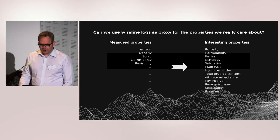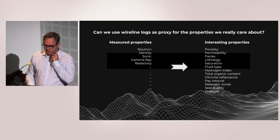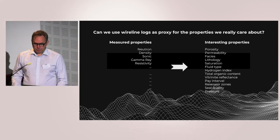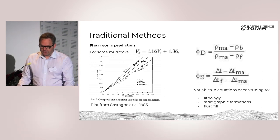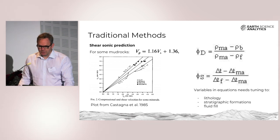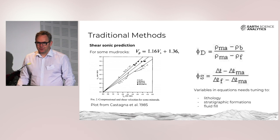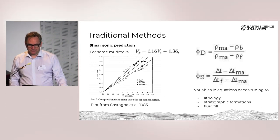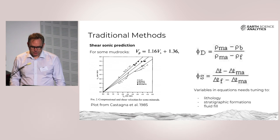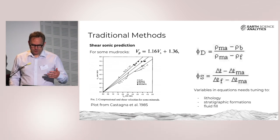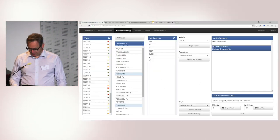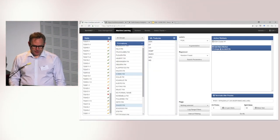Can we use wireline logs as a proxy for the properties that we really care about, like porosity and permeability? We know already that we can, because we do this in petrophysics, where we use physics equations and empirical equations. One of the challenging points is that there are constants and variables in these equations that we do not necessarily know, so experts need to tune these to the local context of the wells, multiple times in each interval of each well. This takes time and is an expert-driven approach.